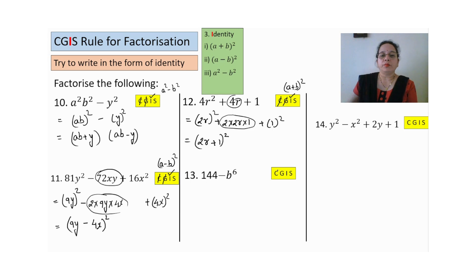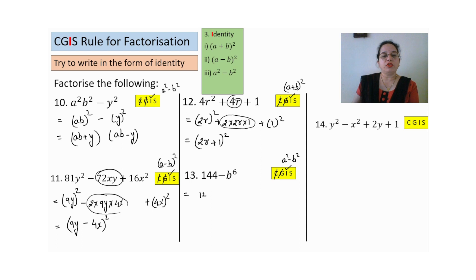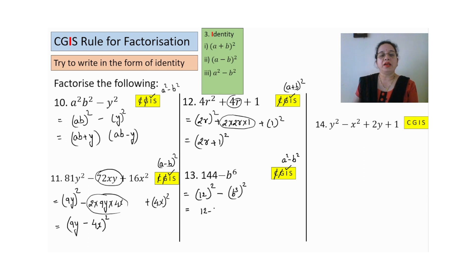Thirteenth sum — common not possible, grouping not possible, we go for identity. Two terms, middle sign is minus, so a²-b². Write 144 as 12² and b⁶ as (b³)² using laws of exponents. Once we add and once we subtract: (12+b³)(12-b³). So this is the answer.